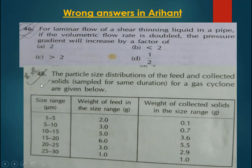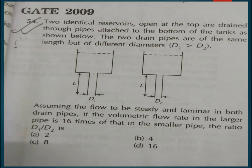Question 48, asked in GATE 2011: the answer given is C while correct answer is D. You can check the official answer key, which I have uploaded on my GATE Google Drive. The actual reason is that you cannot take a simple mean — you have to take a weighted average for this question, so the correct answer is D. Question 54, asked in GATE 2009: the answer given in Arihant is B while the correct answer should be A. The correct answer is available in unit operation.